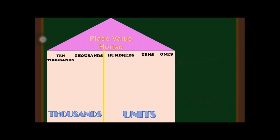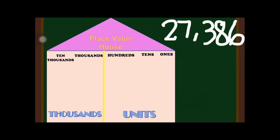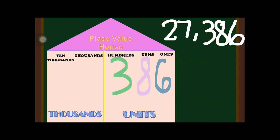For the first example, we have 27,386. In identifying the place value, we start from right to left. The first digit from the right is digit 6, so digit 6 is in the ones place. Next is digit 8, which is in the tens place. Digit 3 is in the hundreds place, digit 7 is in the thousands place, and digit 2, being the fifth digit, is in the ten thousands place.